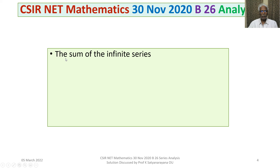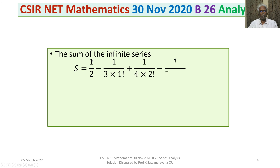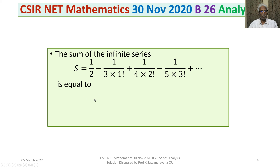The problem: the sum of the infinite series S is equal to 1/2 minus 1/3 into 1 factorial, plus 1/4 into 2 factorial, minus 1/5 into 3 factorial, plus etc., is equal to?